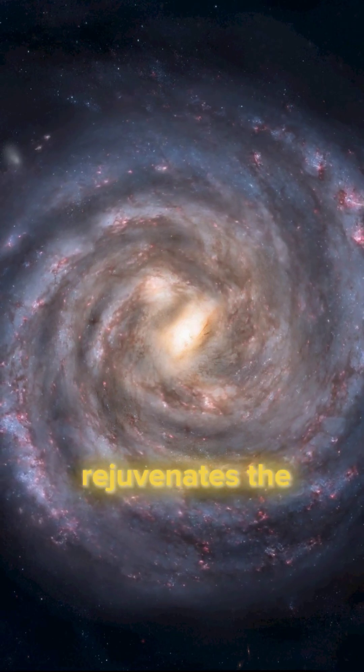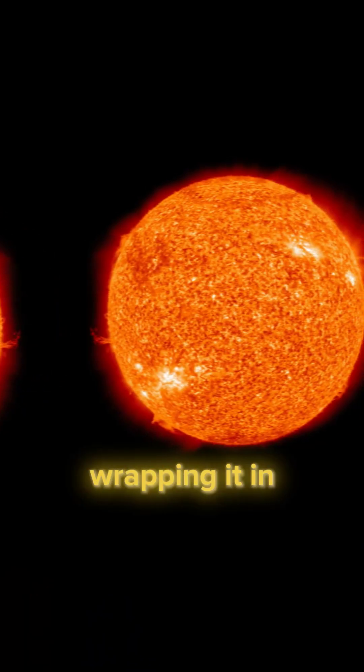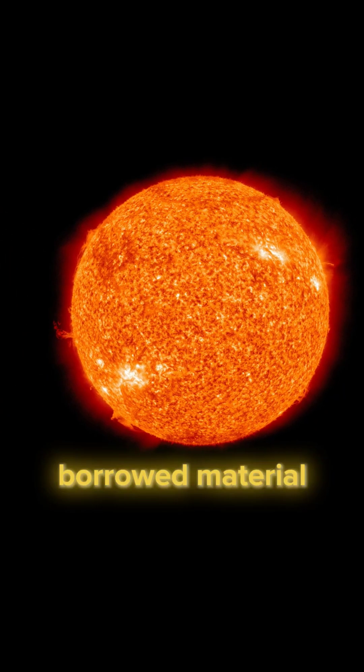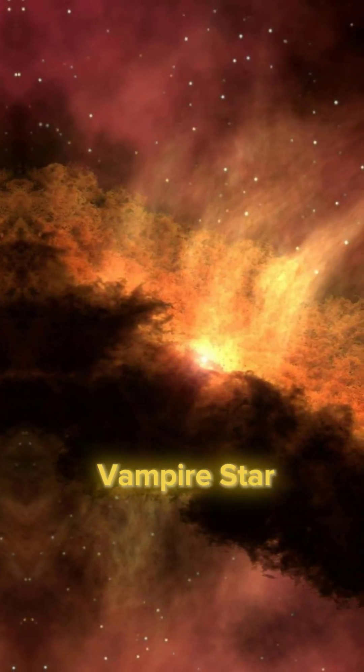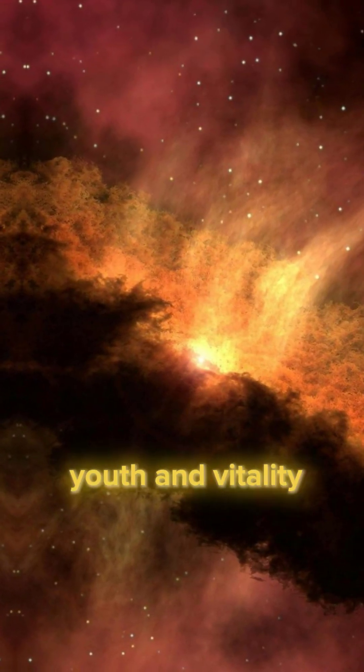This cosmic waltz rejuvenates the elder star, wrapping it in a brand new glow. Borrowed material forms a shimmering halo around the vampire star, making it sparkle with renewed youth and vitality.